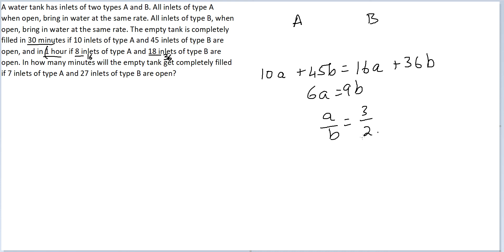If this is the case, if A by B is equal to 3 by 2, now you can also identify the total quantum of work. Let efficiency of every inlet pipe in type A be 3 itself and every inlet pipe in type B be 2 itself. So the total quantum of work would be 8 inlet pipes, so you get 24 from A quantity filled. And from B you have a rate of 2 and 18 inlet pipes, so you have 36.